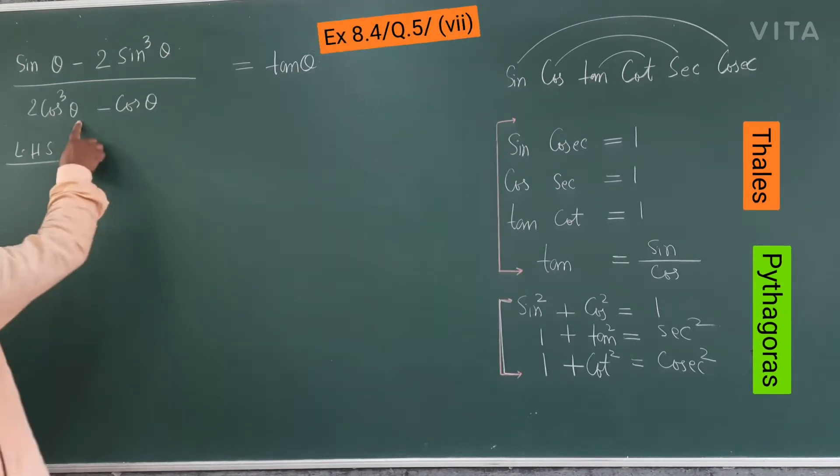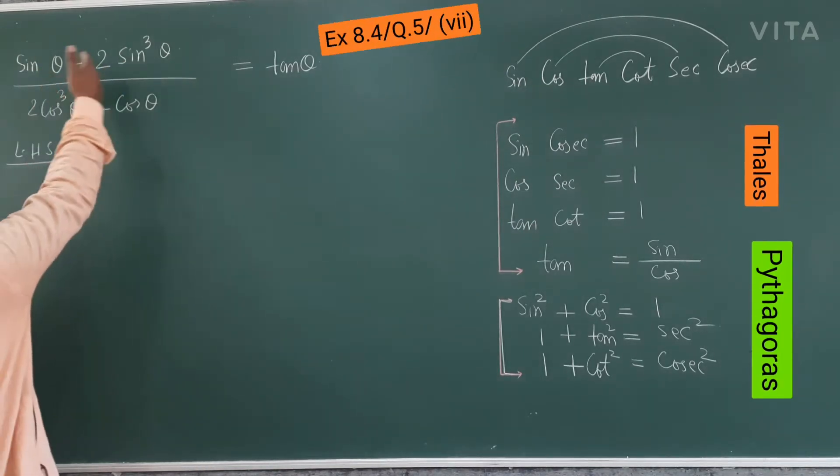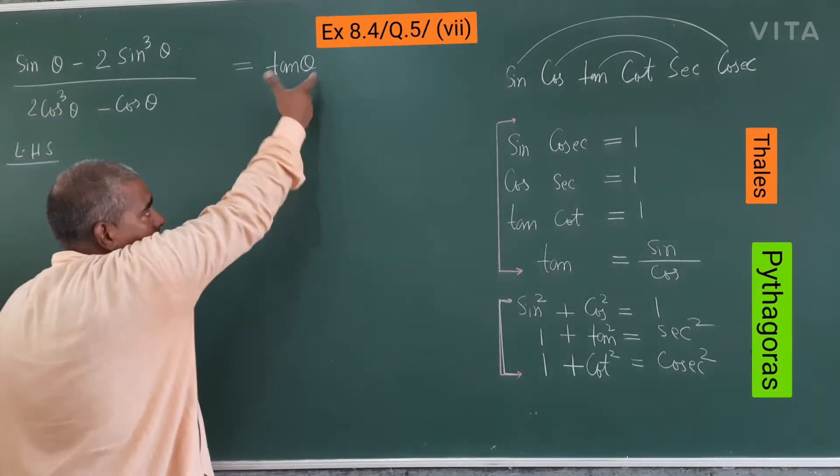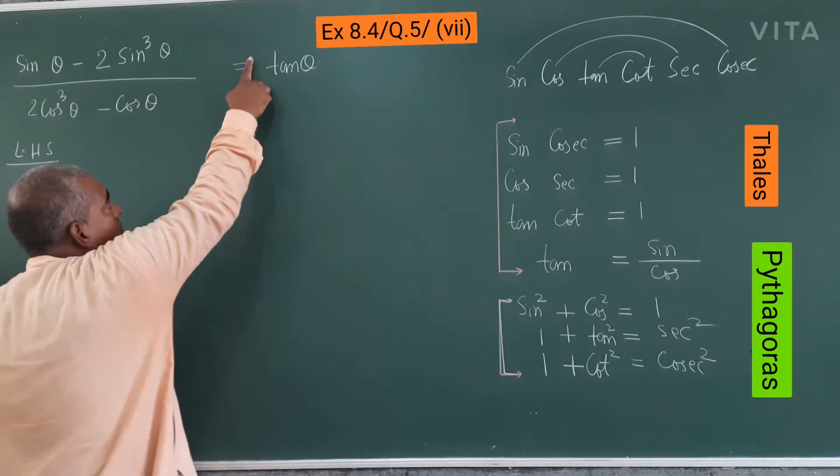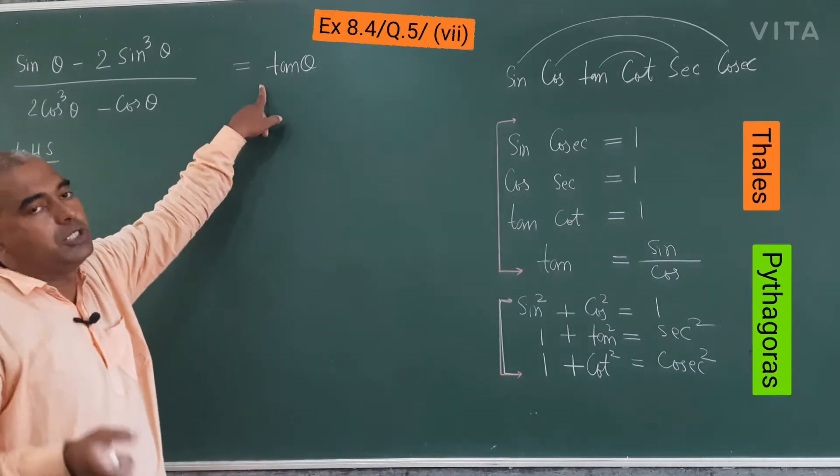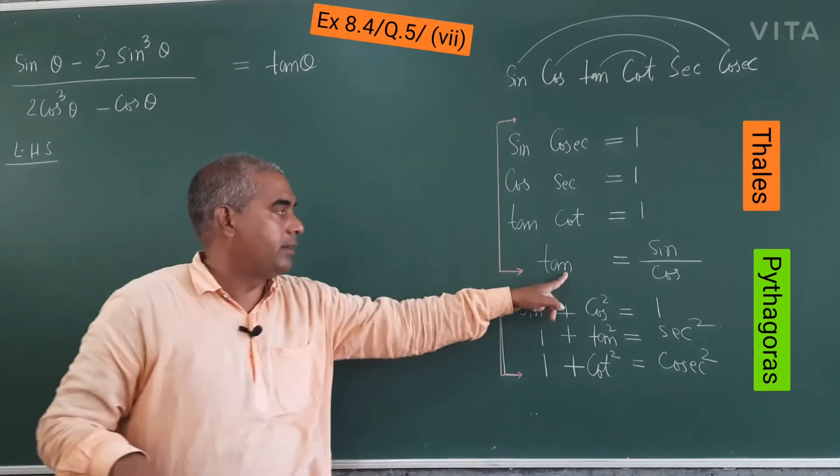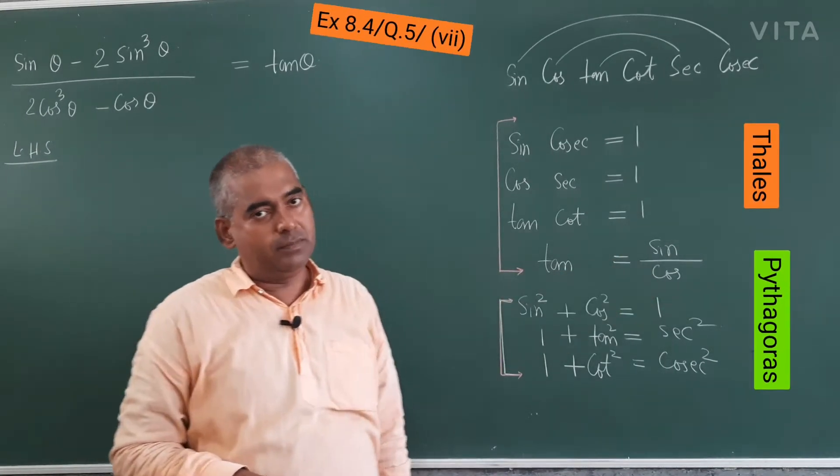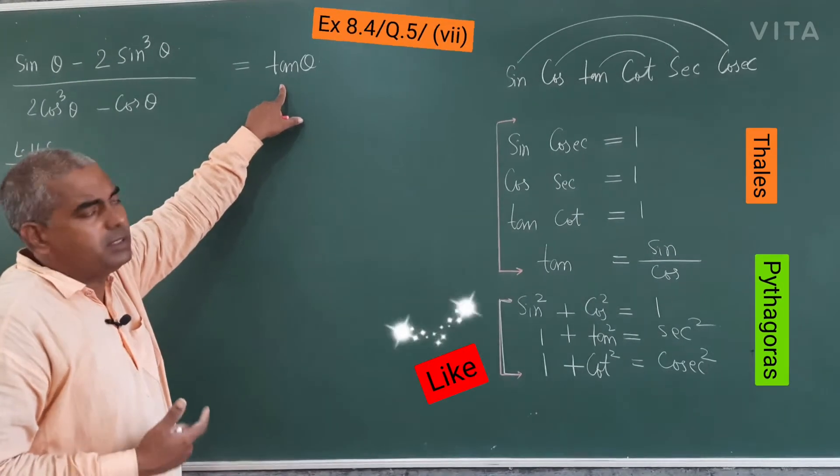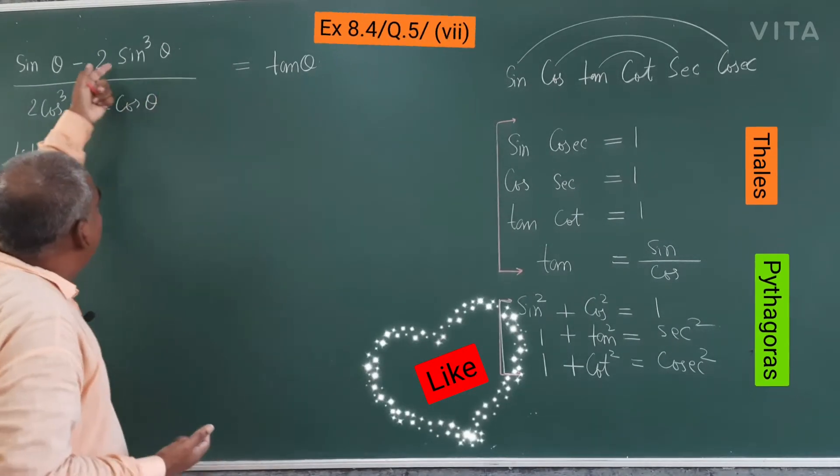Here you see, in this LHS, many terms are there, sin theta, sin theta, cos theta, cos theta. And in the RHS, it's very simple, tan theta. So up to the most, in RHS, what you can do, tan theta is equal to sin theta upon cos theta. So this is, I think, one of the simplest. It appears to be simple. This is what we have to solve.